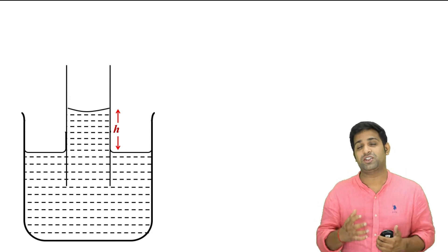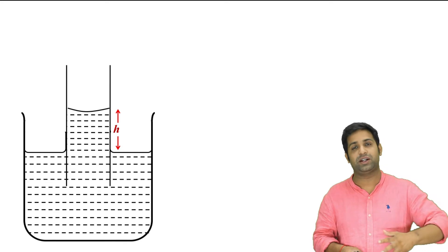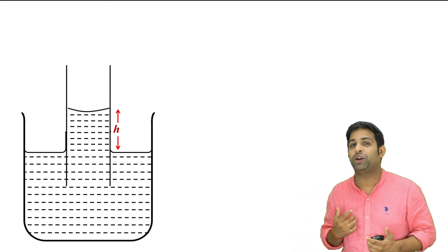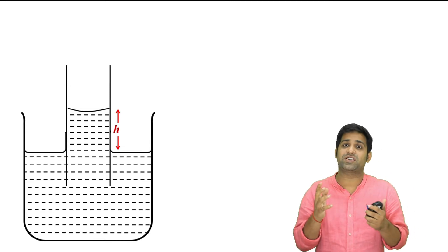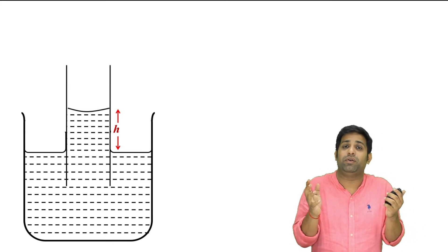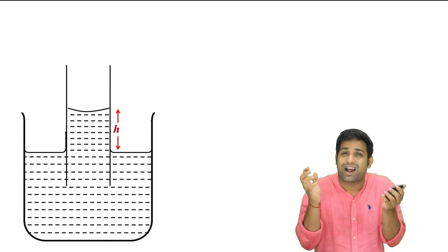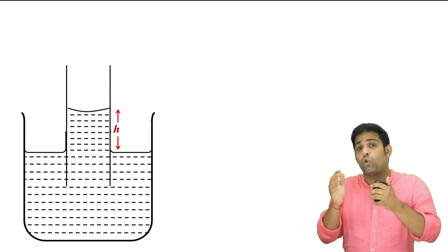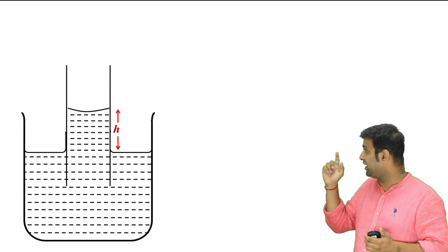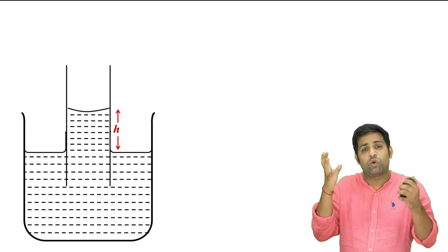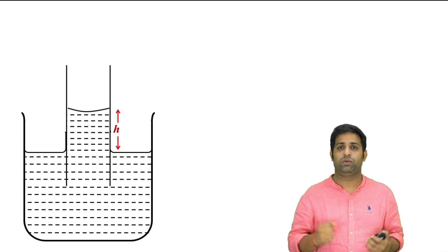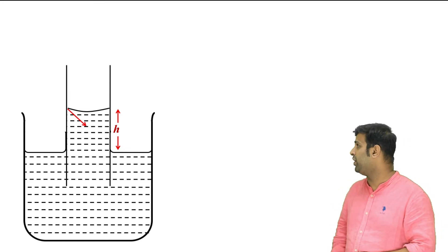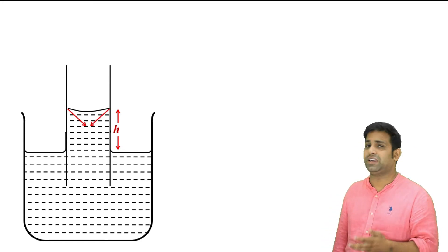Starting with surface tension — it is not a level tension. Due to surface tension, the liquid behaves like a stretched membrane and tries to minimize its surface area. You can see the upper surface of the liquid pulling on the wall. The surface tension force on the wall is T, and I am drawing it in the diagram. Let us say the force is T.